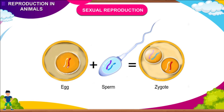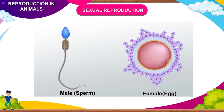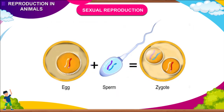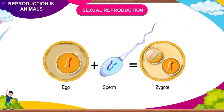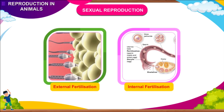Most of the animals reproduce sexually. Sexual reproduction takes place by the fusion of male and female reproductive cells. The male reproductive cell is called the sperm while the female is the ovum. When the male and female reproductive cells fuse, a zygote is formed. The process of fusion of sperm and ovum is called fertilization of the egg. Fertilization may be either external or internal.